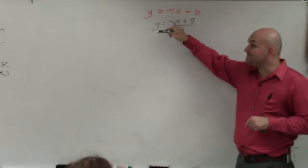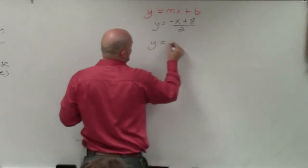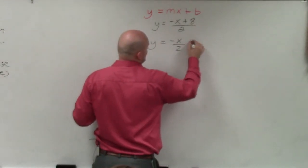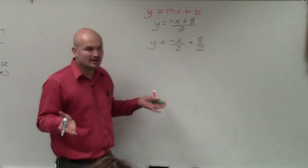So we've got to divide negative x by 2 as well as 8 by 2. So when doing that, we have y equals negative x divided by 2 plus 8 divided by 2. Now, we can go ahead and simplify this.